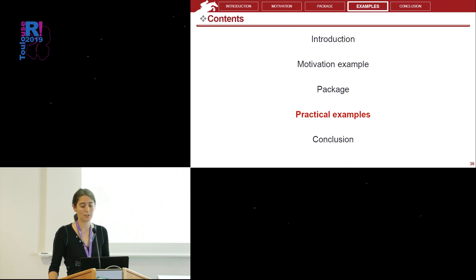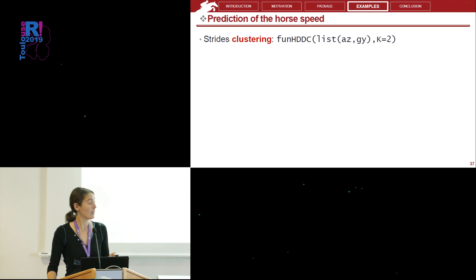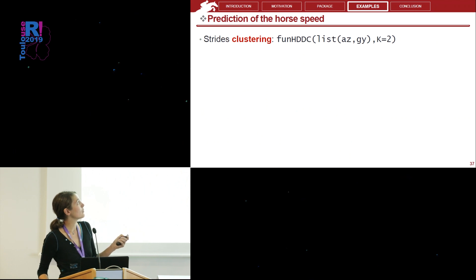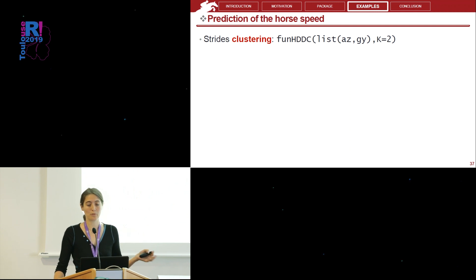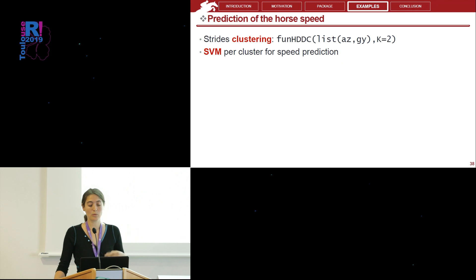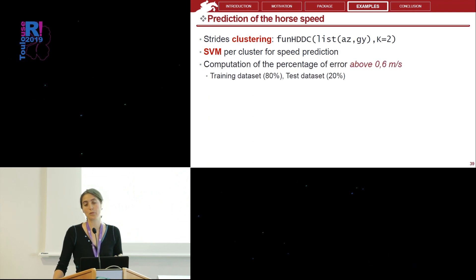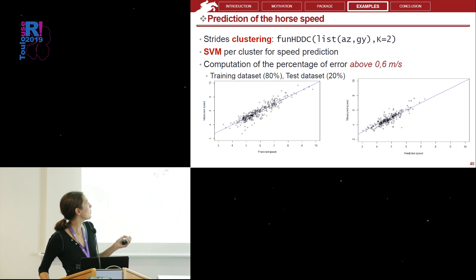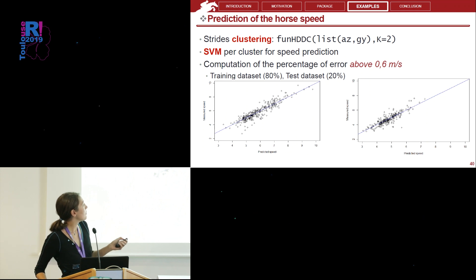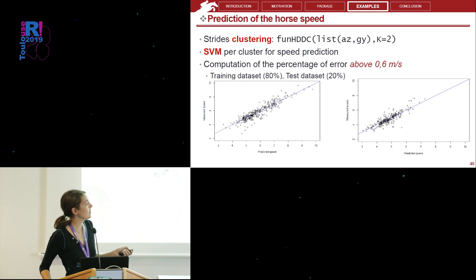Let's go back to the speed prediction for horses. We cluster all strides according to acceleration in the z-direction and angular velocity in the y-direction into two groups — two groups because we tried several numbers of groups and two gave the best subsequent prediction. We then apply an SVM model per cluster to obtain speed predictions, repeated multiple times to get an average percentage of error. Here are the results for one simulation: predicted speed versus measured speed, where the blue line is the first bisector. We can see some poorly estimated points. The first plot is for cluster one and the second for cluster two, and cluster two has a lower speed than cluster one.